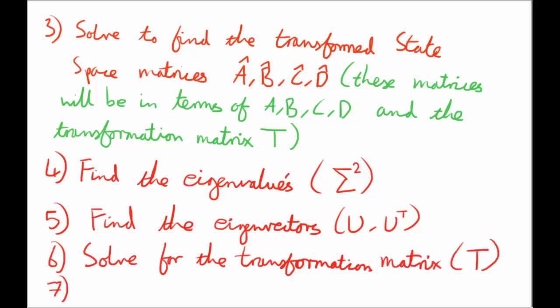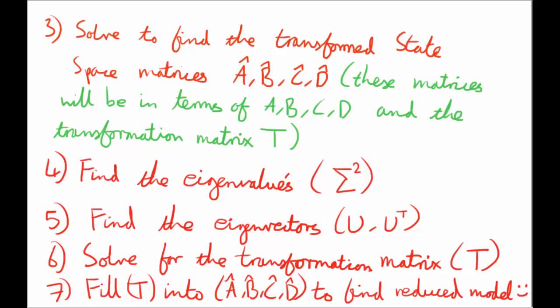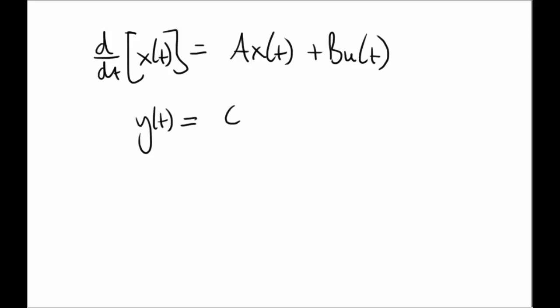Where with this transformation matrix, we can then insert them into the equations that you solved for in part three above, and then you'll be able to find your new balanced system. The first part is stating a system, which is just the standard state space system in the continuous domain, where I've assumed that D is equal to zero, so there's no feedforward disturbances.